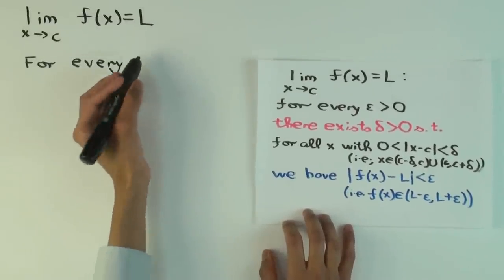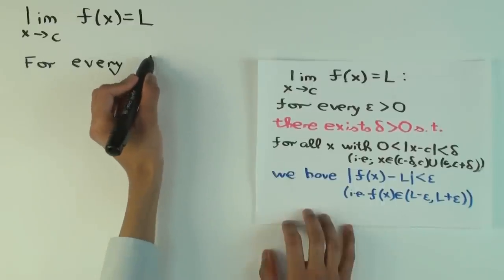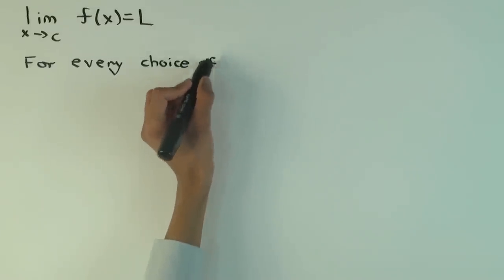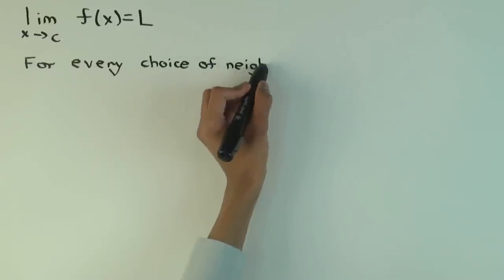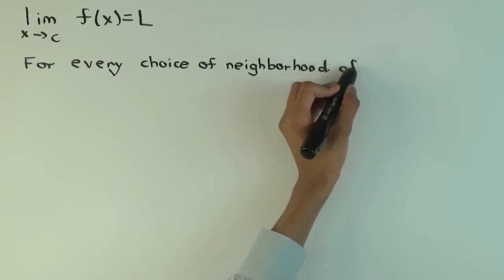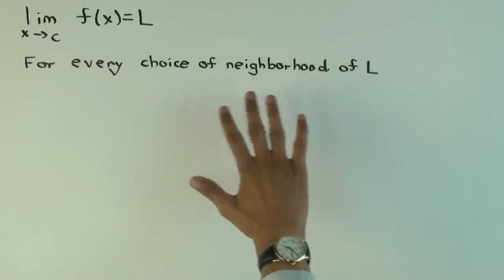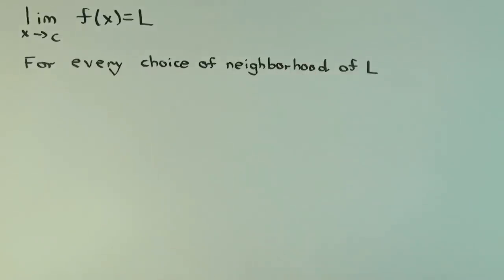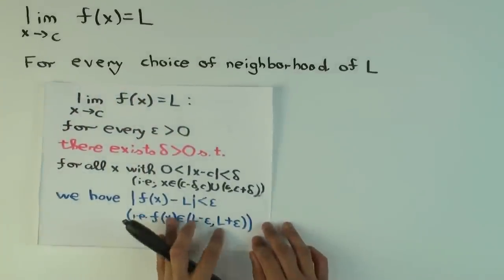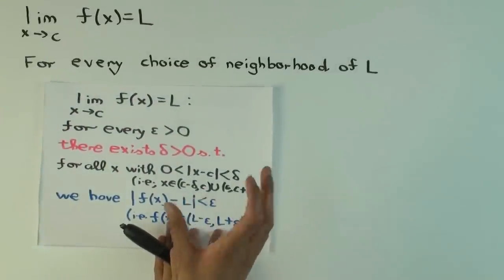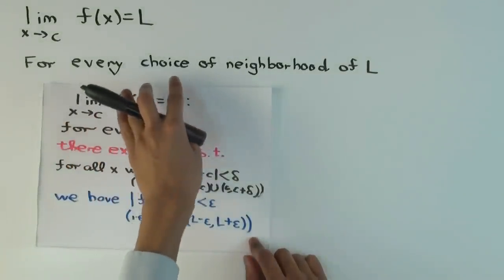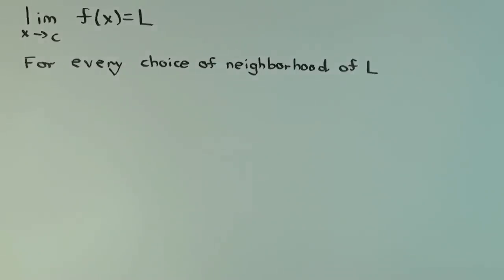So instead of saying for every epsilon greater than zero, let's say, for every choice of neighborhood of L. So what do I mean by that? I have not really defined it. So this is a definition which is not really a definition, it's sort of the blueprint for definitions. You fill in the details and get a correct definition. So by neighborhood, I mean, in this case, something like L minus epsilon, L plus epsilon. It's an open interval surrounding L. So the conceptual definition starts by saying, for every choice of neighborhood of L.